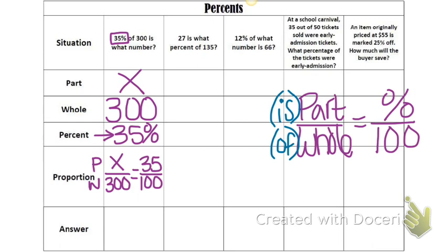In this case, you can actually just use simple equivalent ratios to answer. So this is 100 times 3 is 300, so 35 times 3 is your answer, and 35 times 3 is 105. So 105 should have been your answer. I hope that helps clear it up.